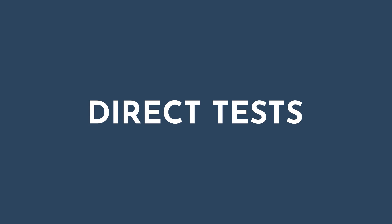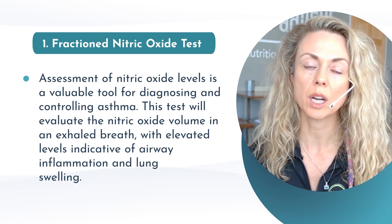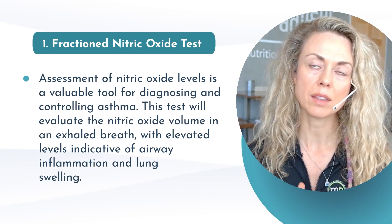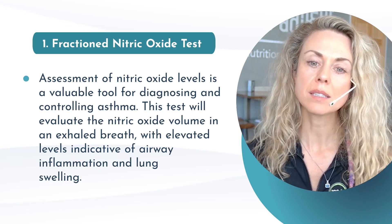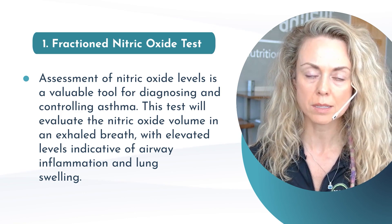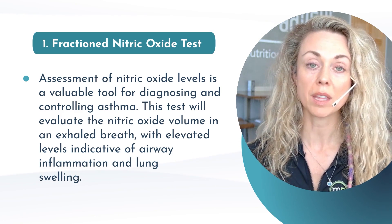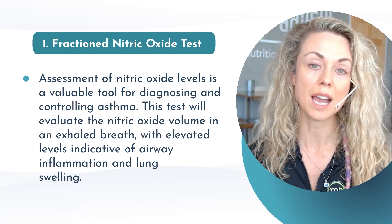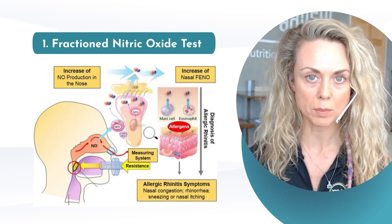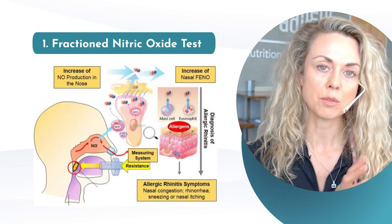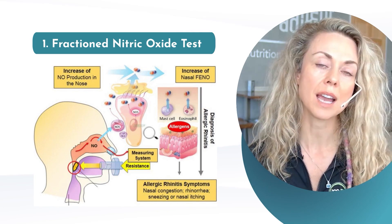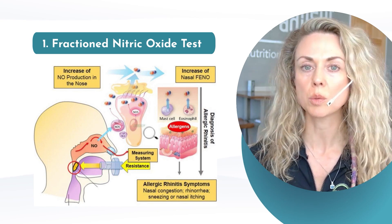The first test is the fractional exhaled nitric oxide test, performed in a physician's office by breathing into a machine to measure exhaled nitric oxide levels. This test is specifically used for diagnosing and managing asthma because it can identify airway inflammation. Referring back to our pathways, we think about nitric oxide's impact on the airway and its recirculation when optimized. However, if the exhaled nitric oxide is higher — counterintuitively — that signals potential inflammation and issues with bronchodilation.